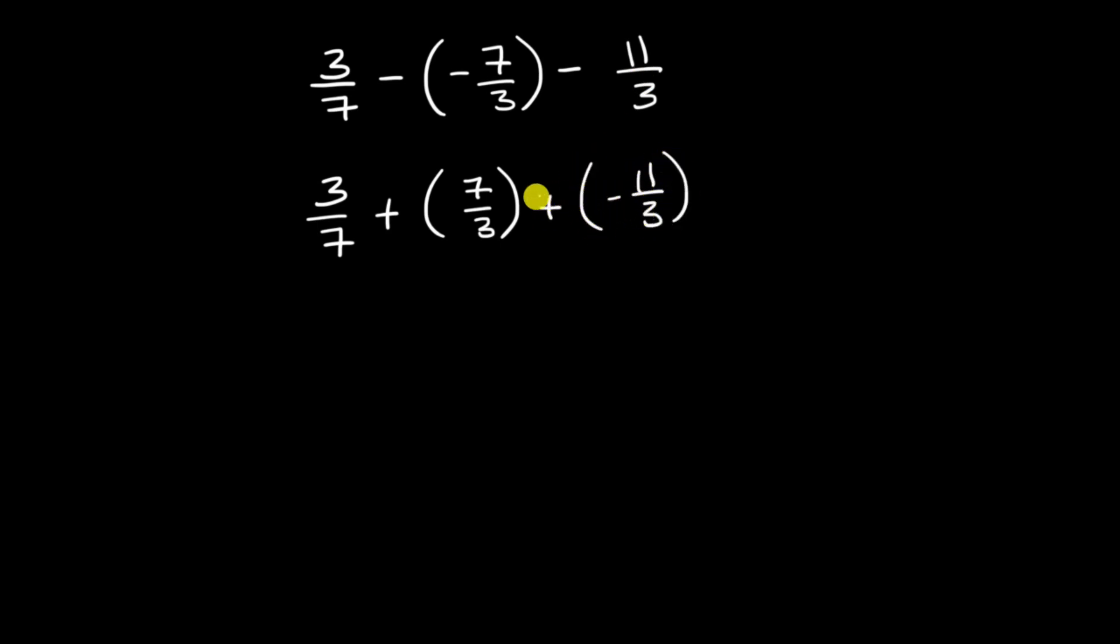Now, addition, you can use the associative property. You could add these two first, or you could add these two first. And I like adding these two first because they have the same denominator. So if I have 7/3 plus negative 11/3, what is that going to get me?